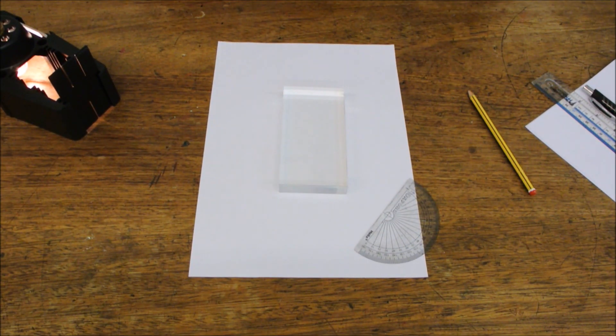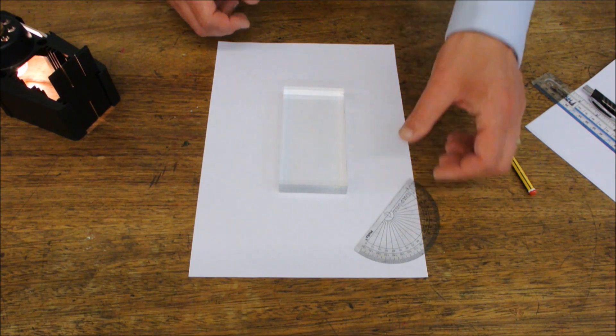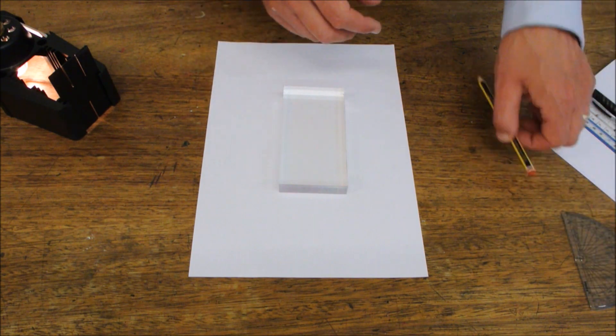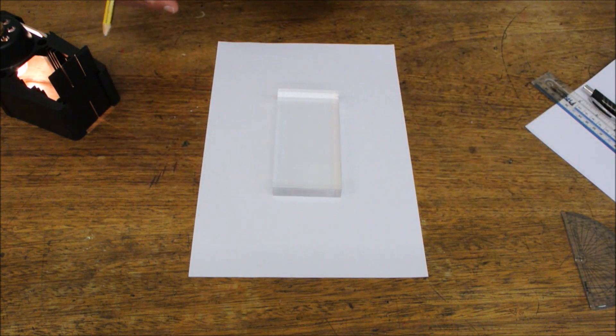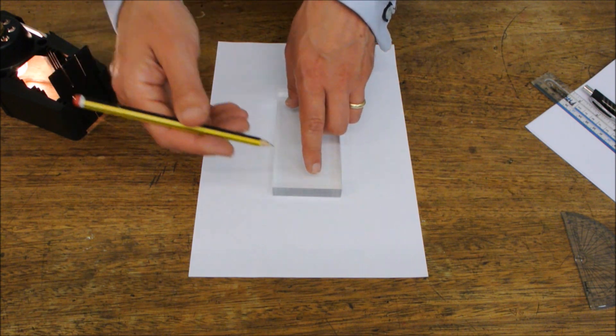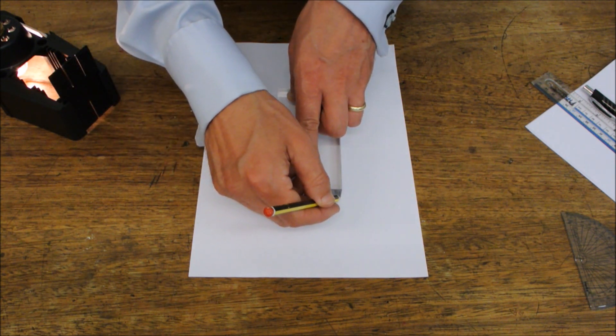So this is GCSE required practical number 9, investigating the refraction and the reflection of light. We'll look at refraction to start with, and I've zoomed us in onto the actual piece of paper we'll be working on, just to give a real level of clarity to this.